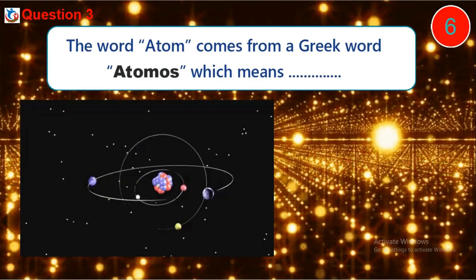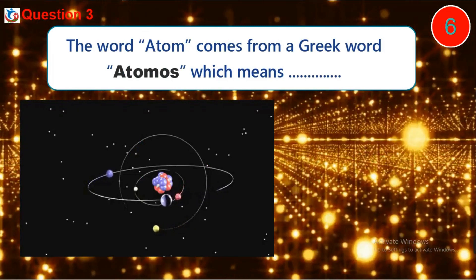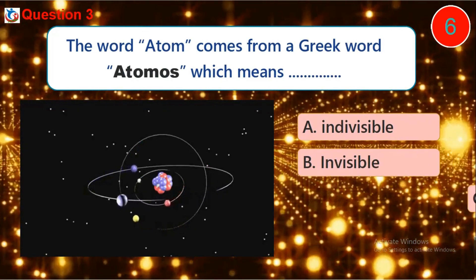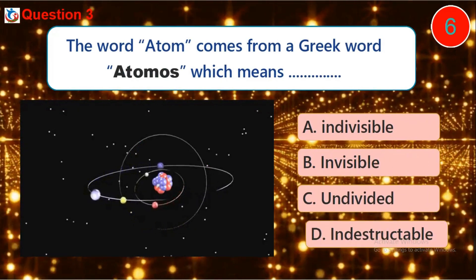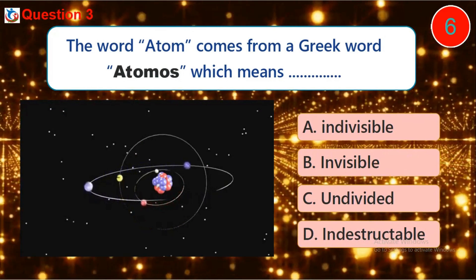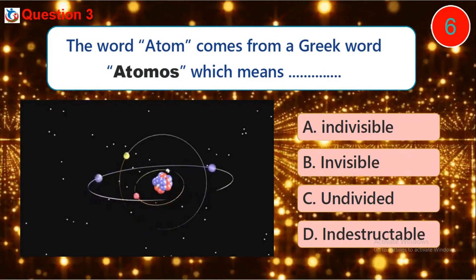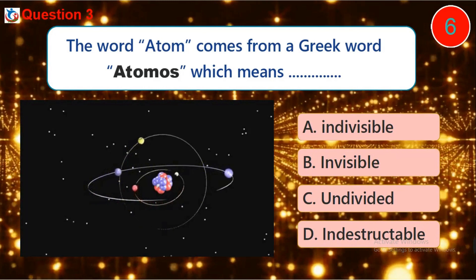Question 3. The word atom comes from a Greek word 'atomos,' which means blank. A. Indivisible. B. Invisible. C. Undivided. D. Indestructible.